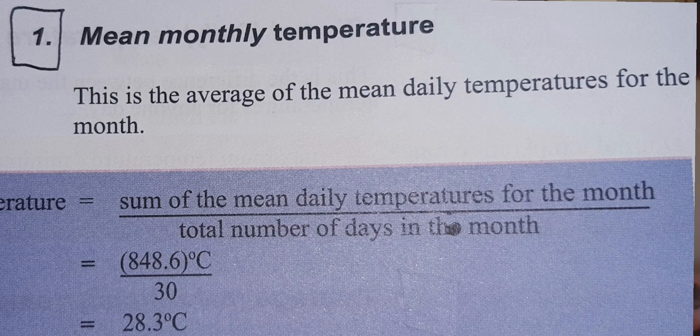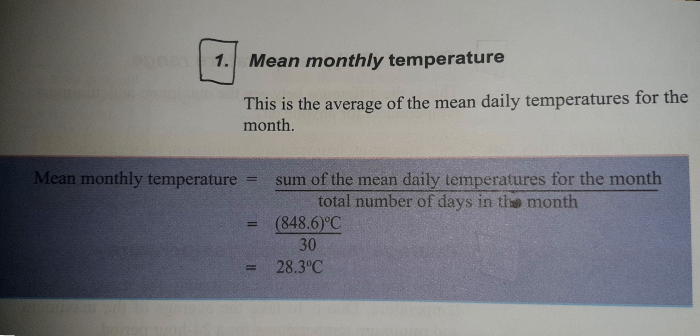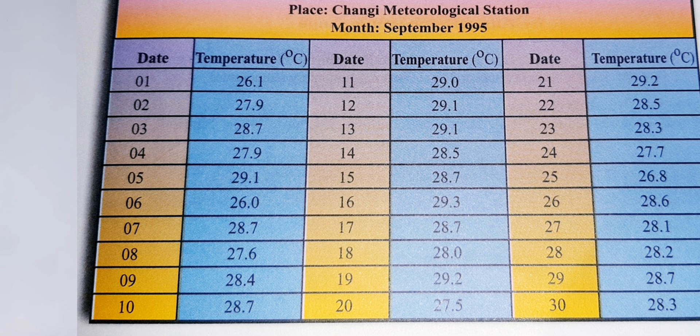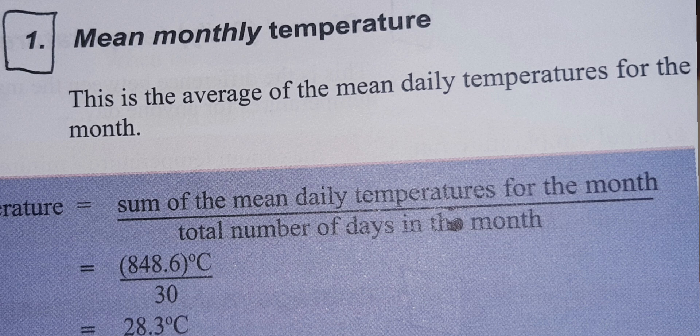Next is the mean monthly temperature. So what is the mean monthly temperature? The formula is: sum of the mean daily temperature for the month divided by the total number of days in the month. Here we can see the sum of mean daily temperature for the month is 848.6 degrees Celsius, divided by 30 — that is 30 days. Then using a calculator, the answer is 28.3 degrees Celsius.